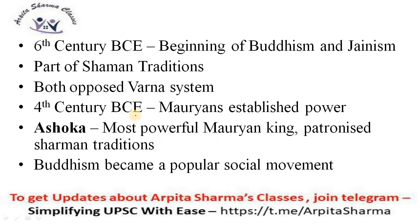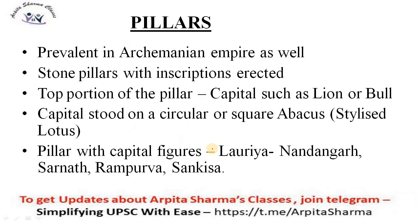During the 4th century BCE, the Mauryas tried to establish their power. Ashoka, who was one of the most powerful Mauryan kings, patronized the Shramana traditions, and Buddhism became a popular social movement. When a rich and powerful king or leader supports a tradition, naturally the people will also follow the same because he has a greater influence on the people.